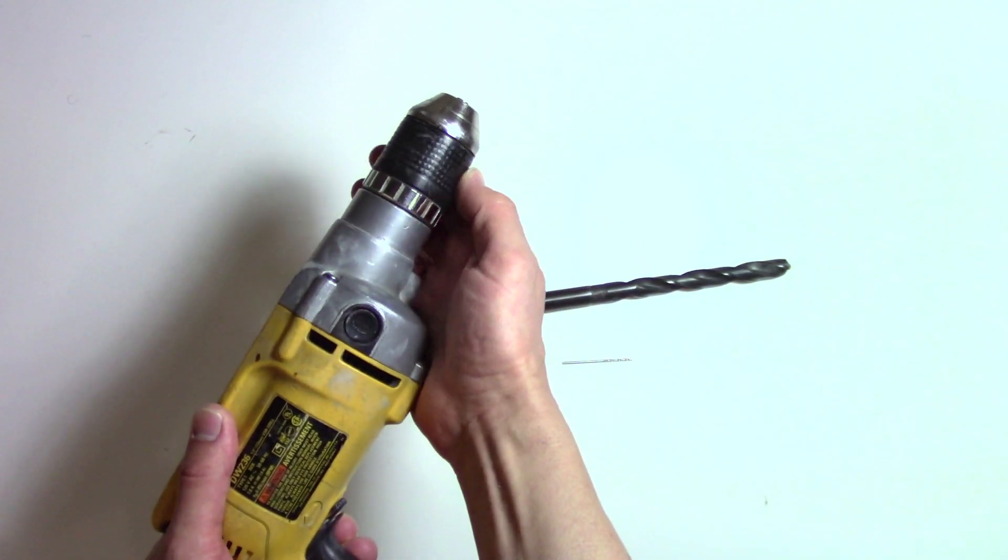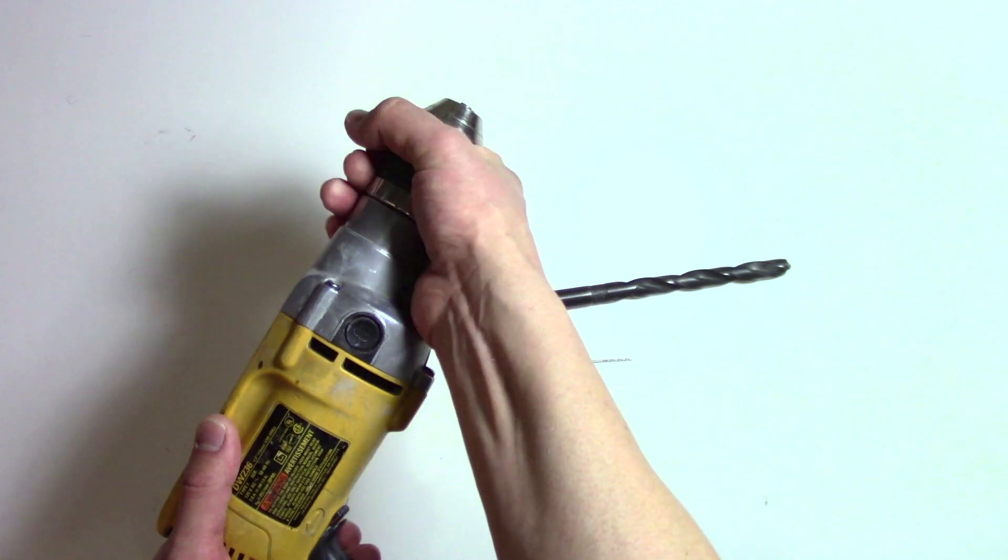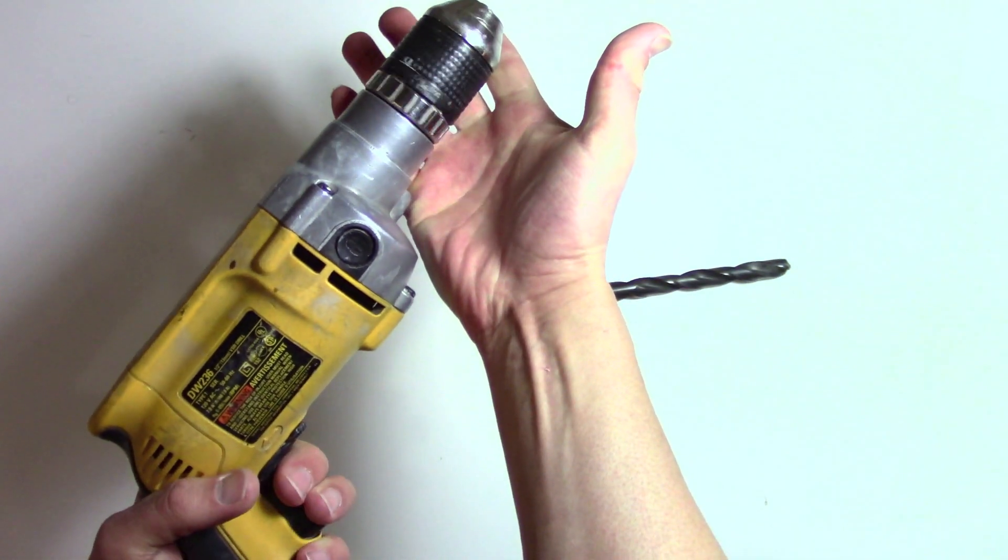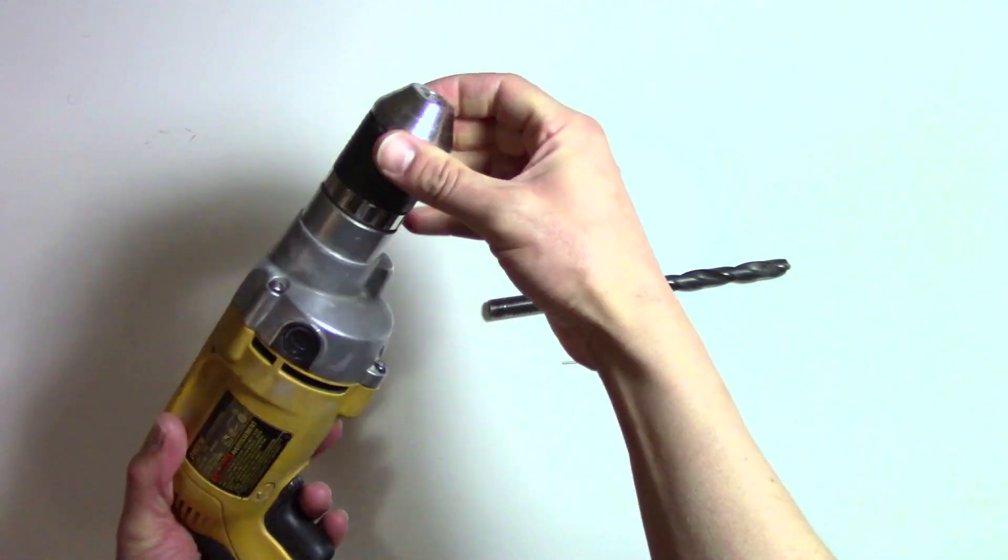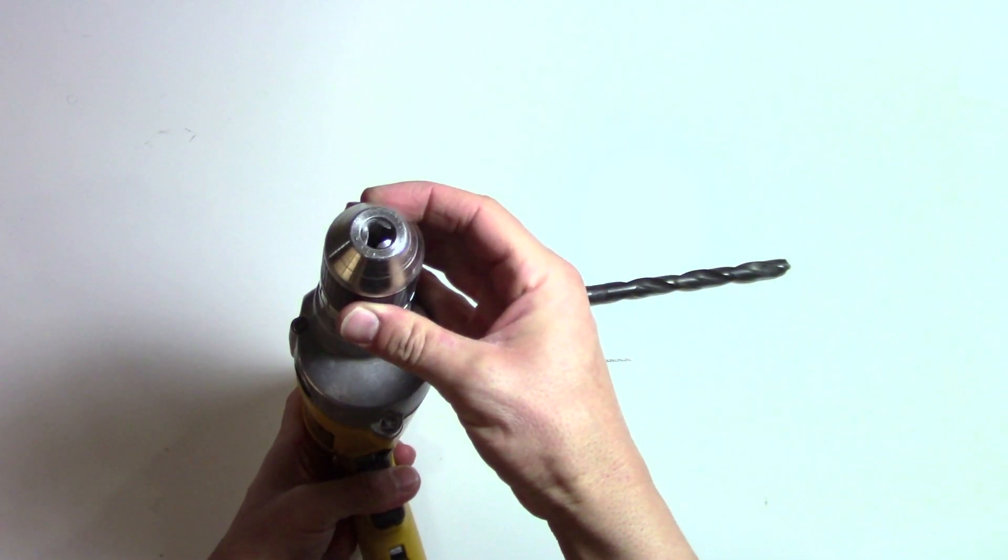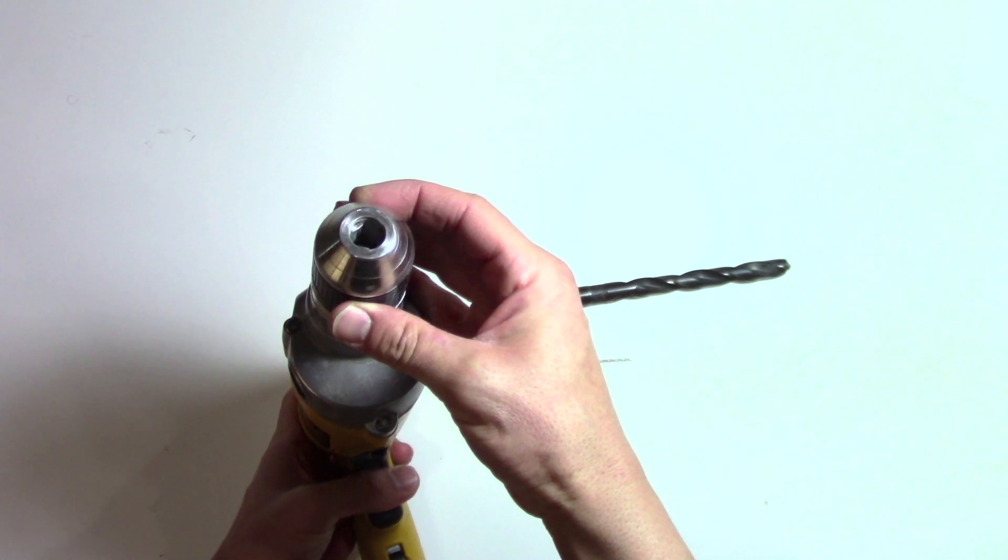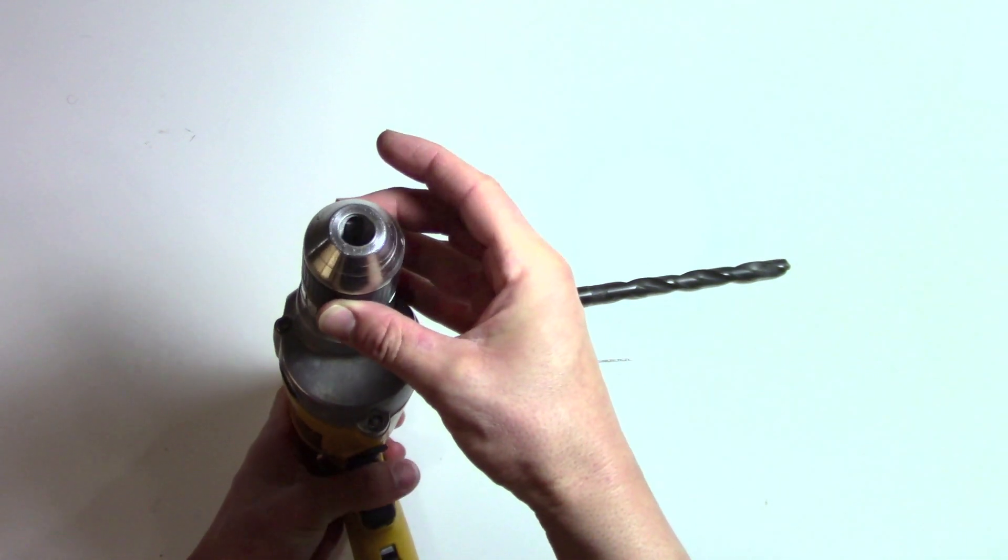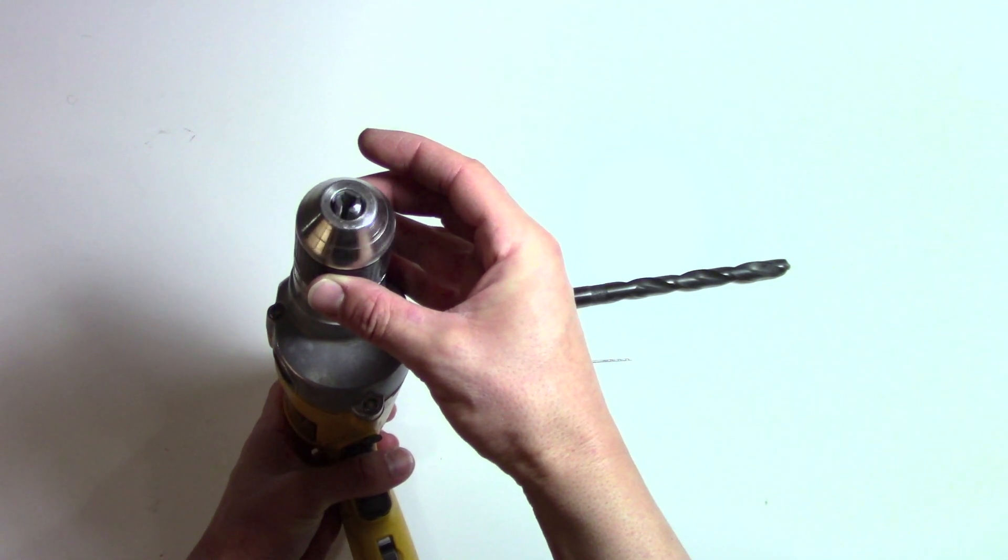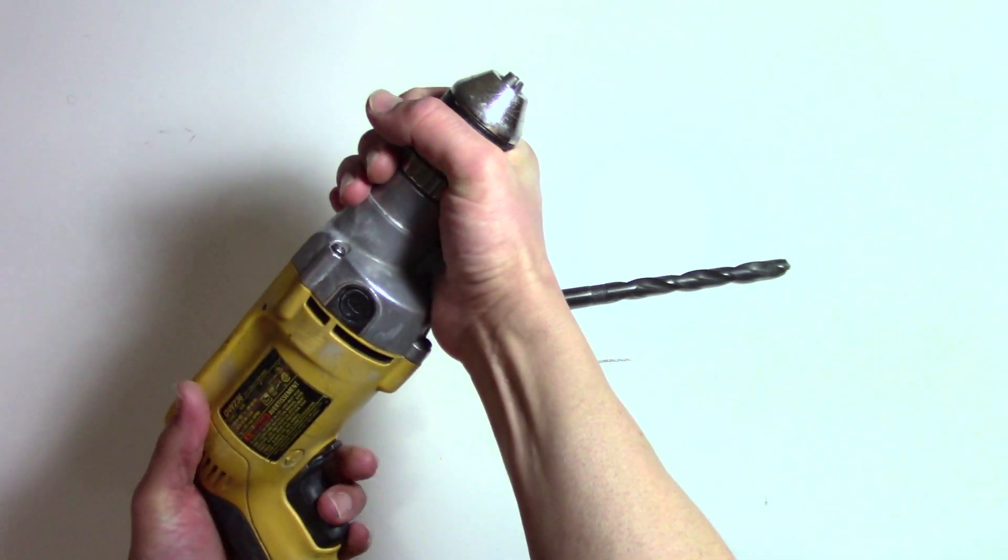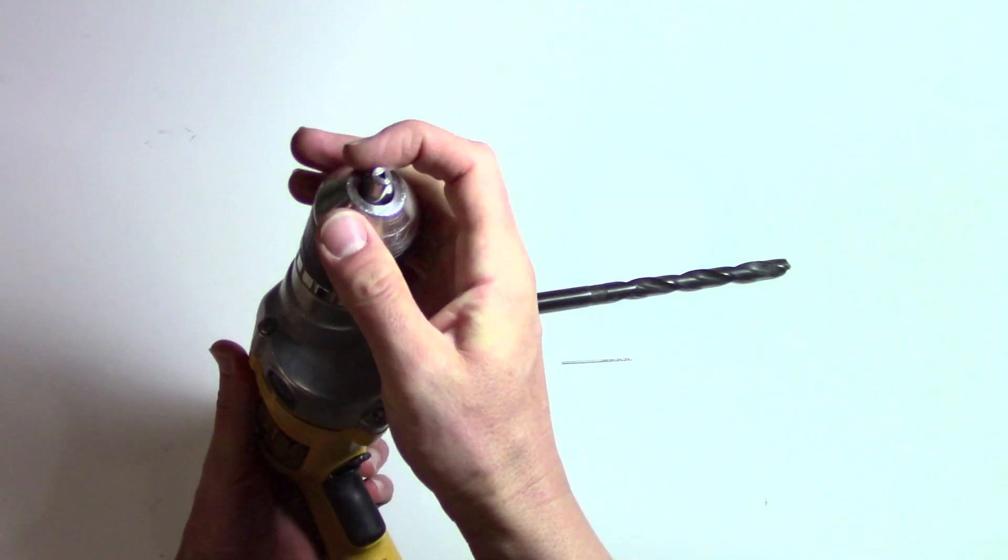And you can, if you look while I spin it, this opens up, and then the teeth will come, see them close in there, just by holding this. And so you grip it and you can tighten it up, so it's really quick.